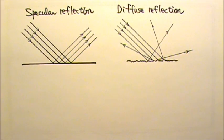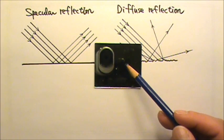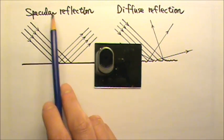For example, we can use the ray model or ray approximation to illustrate the reflection of light. When light is reflected off of a smooth surface like this mirror, we have what we call specular reflection.